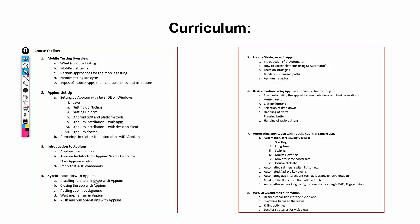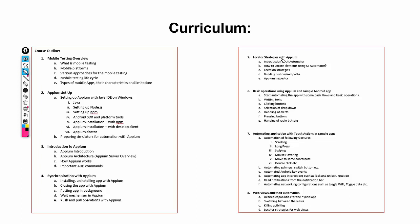Then we will cover synchronization with Appium: how to install and uninstall applications, how to close the application, push and pull operations, wait mechanisms, and how to put the application in the background. After that, we will cover locator strategies — how to locate elements using UI Automator, how to locate elements using Appium, what location strategies Appium provides, what the Appium Inspector is, and how to build customized XPaths.